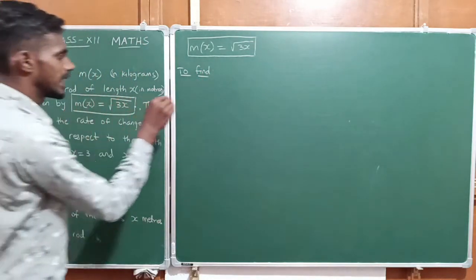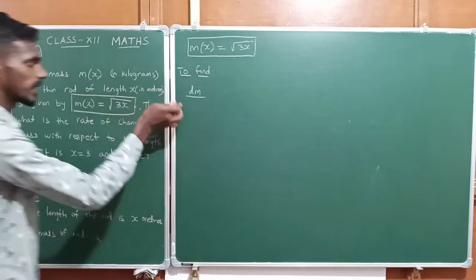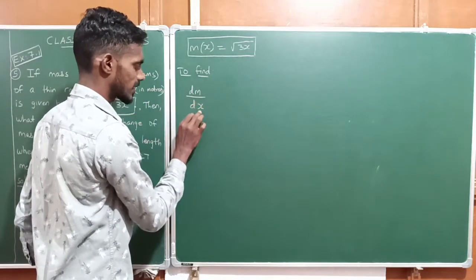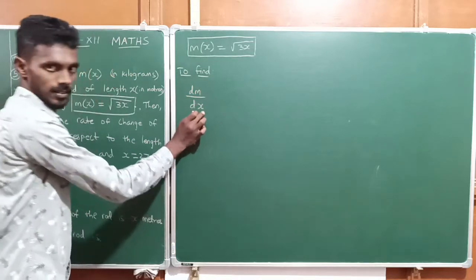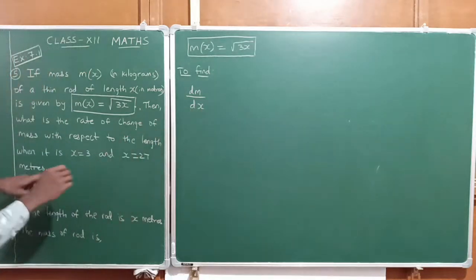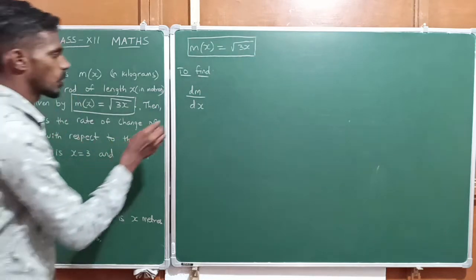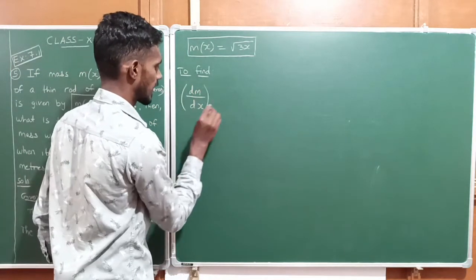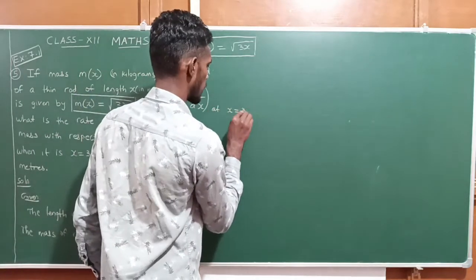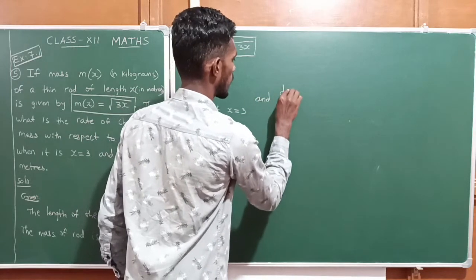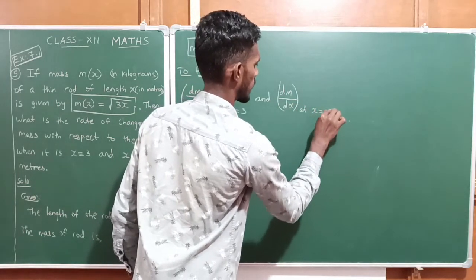Rate of change of mass — the change in mass is dm, with respect to length, so the denominator is dx, because x is length and m is mass. So rate of change of mass with respect to length is dm/dx at the specific points x = 3 and x = 27 meters. We have to find dm/dx at x = 3 and dm/dx at x = 27.